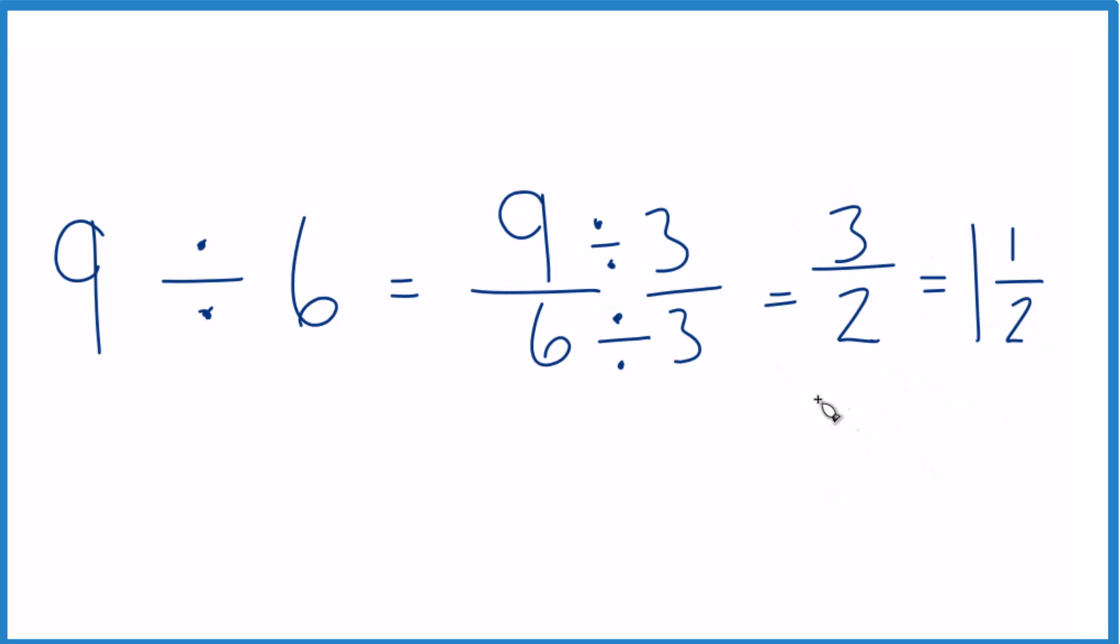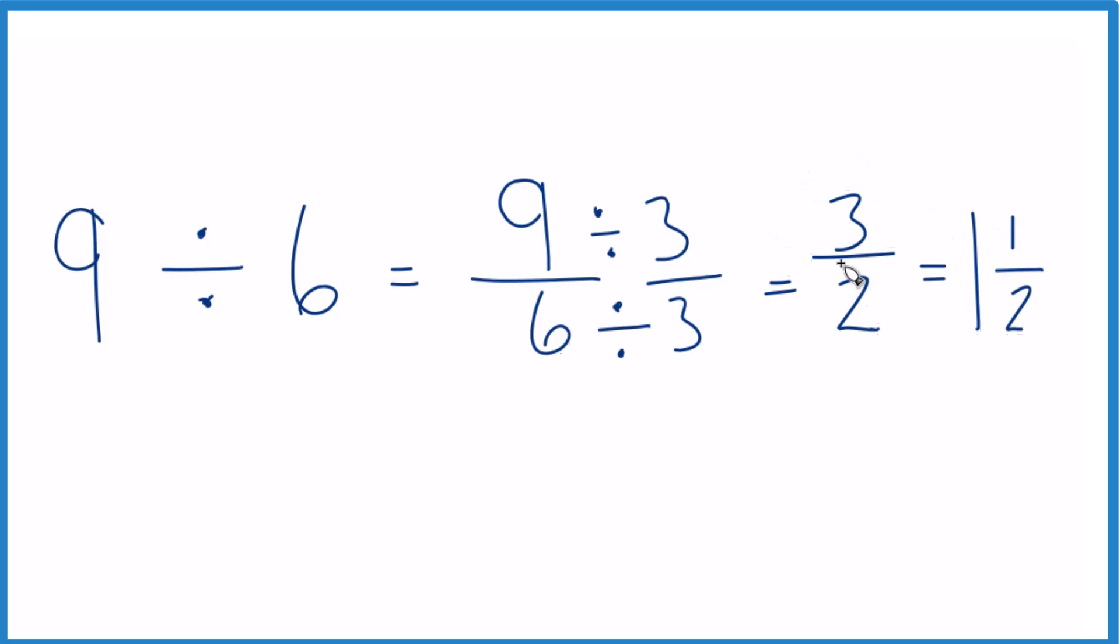You can check to see that the mixed number is in fact 1 1/2 because 1 times 2, that's 2. 2 plus 1 is 3. That's where the 3 comes from. We just keep the 2 the same.